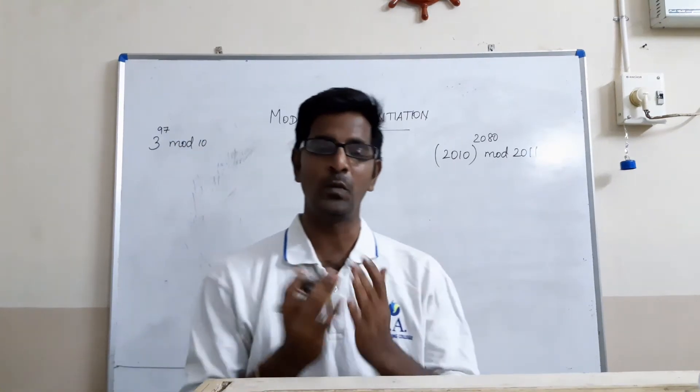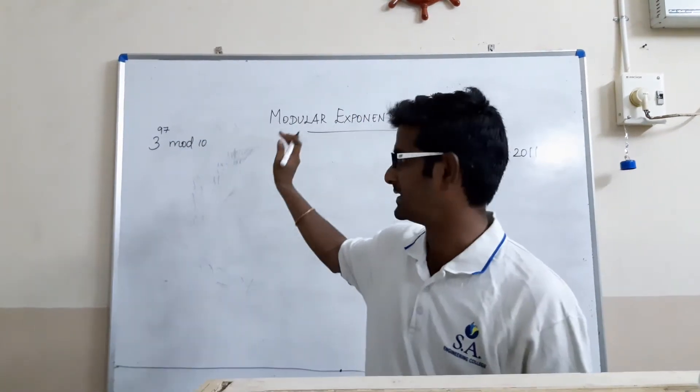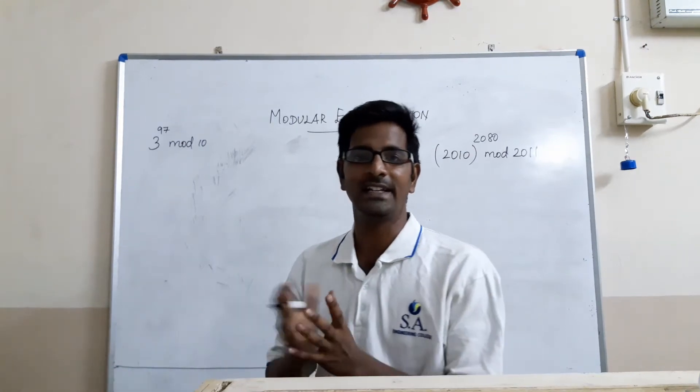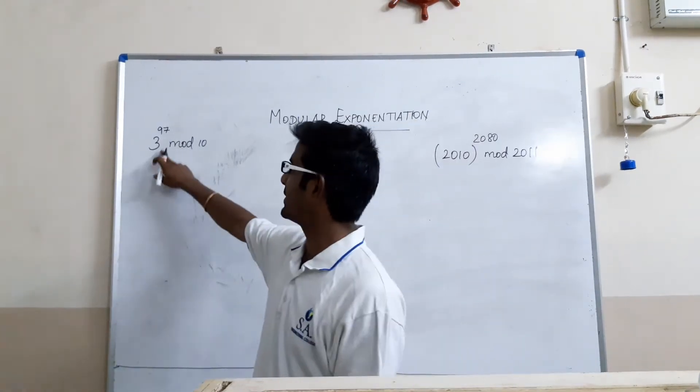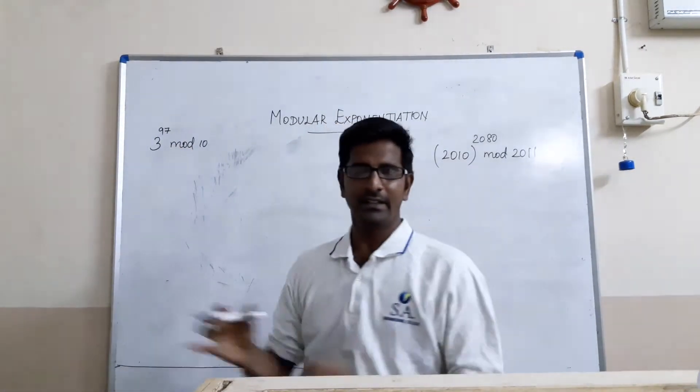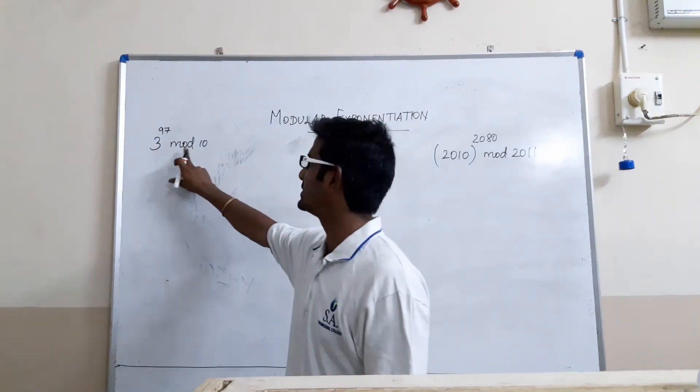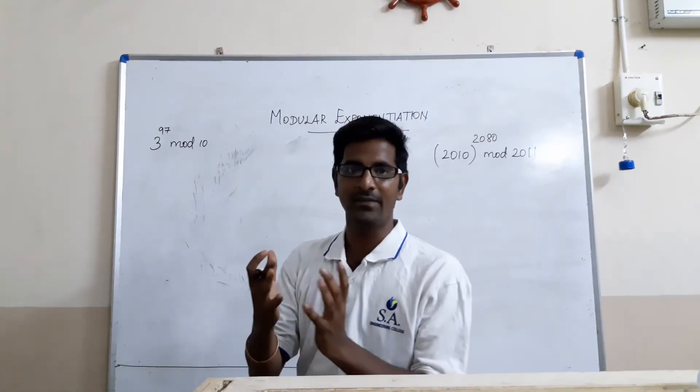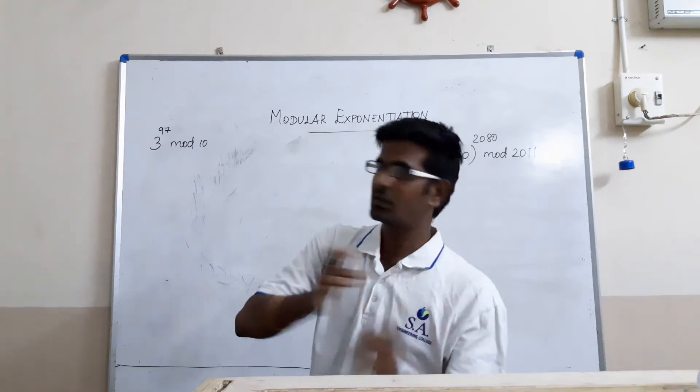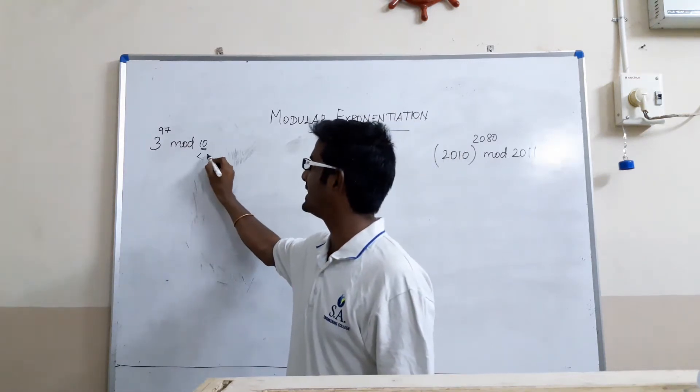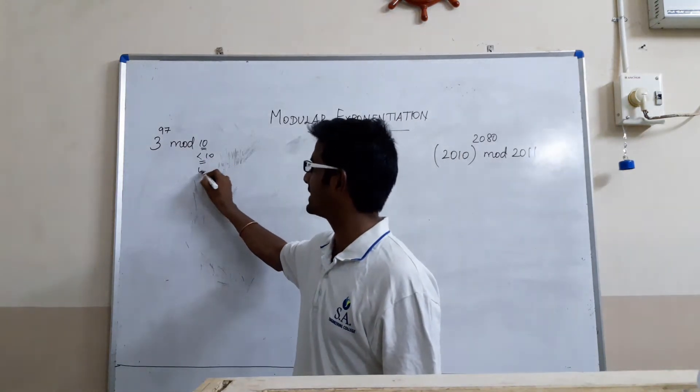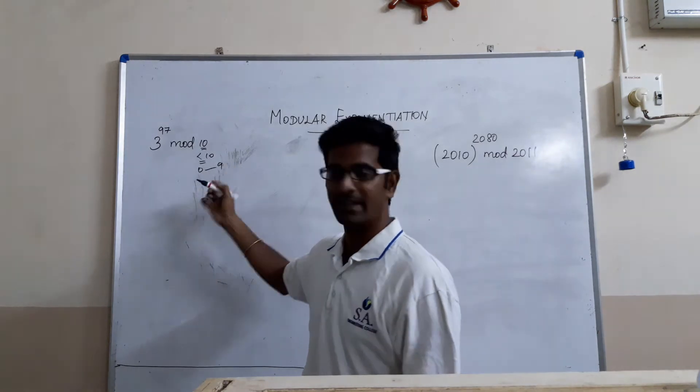Hi, now we will see a few more examples for modular exponentiation. I will take a very easy example in the session now: 3 power 97 mod 10. See, we should always remember whenever it is mod 10, the answer will be from 0 to 9. The answer will be definitely less than 10 only. It means the answer will be from 0 to 9.